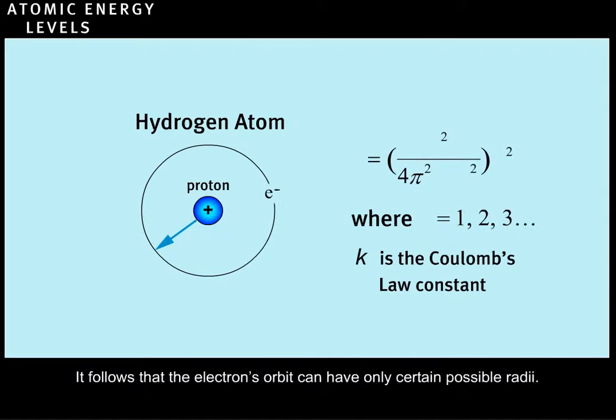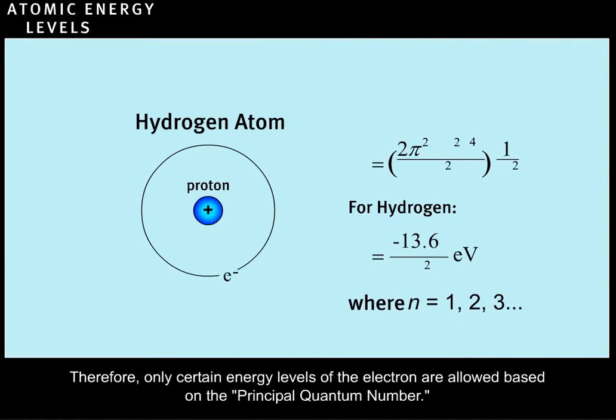It follows that the electron's orbit can have only certain possible radii. Therefore, only certain energy levels of the electron are allowed based on the principal quantum number.